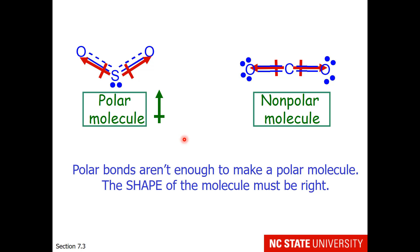This is a reminder that polar bonds aren't enough to make a polar molecule. The shape of the molecule must also contribute to the overall polarity. That's why sulfur dioxide is a polar molecule and carbon dioxide is a non-polar molecule.